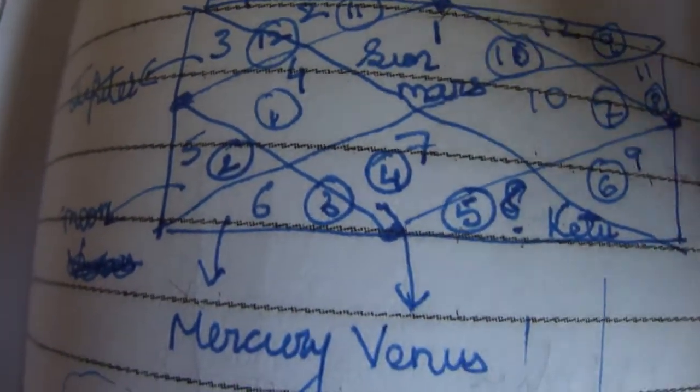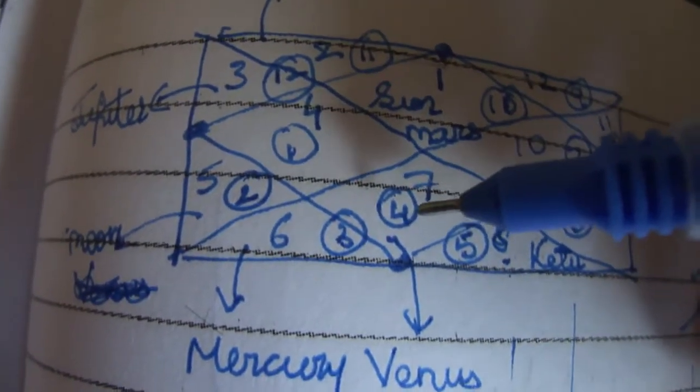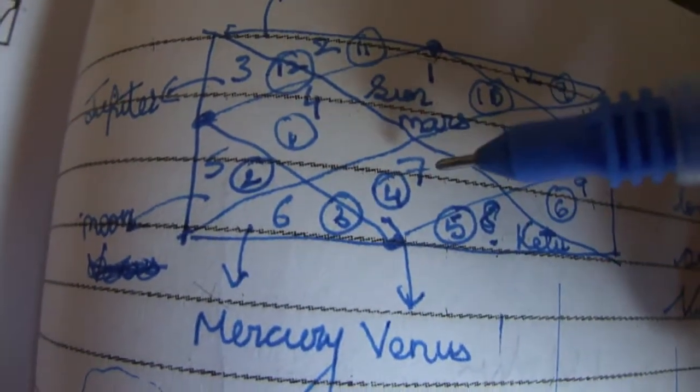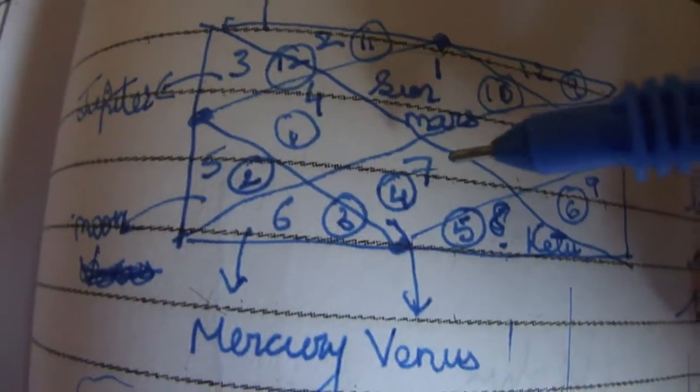You see at his seventh house, sign number four is present, and Venus is present in the seventh house. This is a really good placement for Venus.